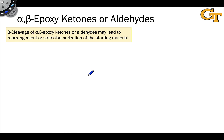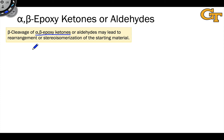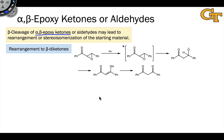We've just seen that cyclopropyl ketones can open through beta cleavage. Alpha-beta epoxy ketones, where an oxygen replaces one of the carbons in the cyclopropane ring, can also ring-open through beta cleavage. This may lead to rearrangement of the starting materials, analogous to the case we just saw, or to stereoisomerization.